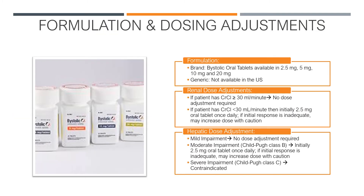Formulation for brand name Bystolic comes in oral tablets and is available in 2.5, 5, 10, and 20 mg. The generic is not available in the U.S.